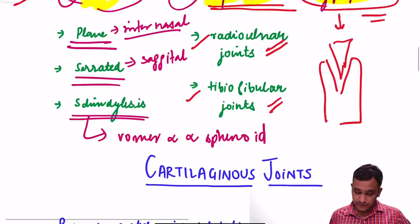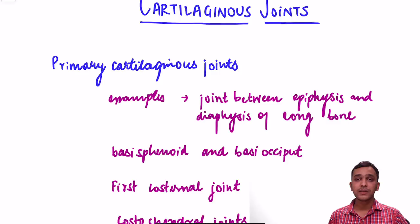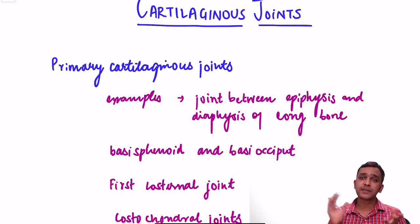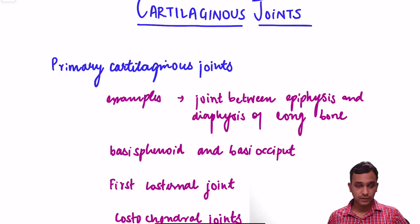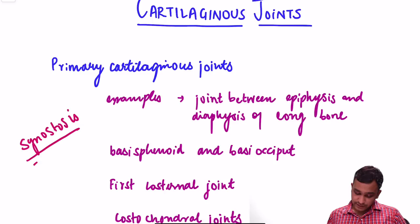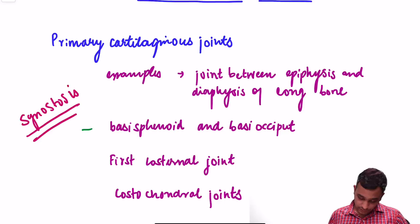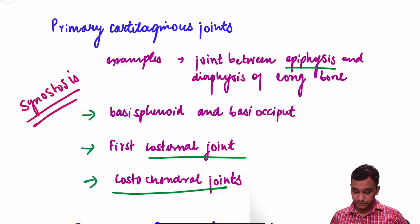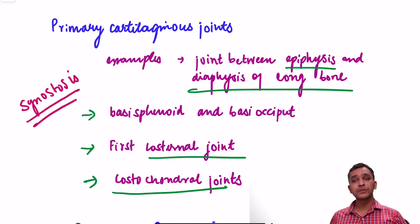Cartilaginous joints are of two types: primary and secondary. Primary cartilaginous joints are temporary and immovable. These joints are united by a plate of hyaline cartilage, which is converted to bone as development occurs after completion of growth. They are also known as synostosis. Examples are the joint between the basisphenoid and basiocciput, the first costo-sternal joint, and the joint between the epiphysis and diaphysis of long bone.